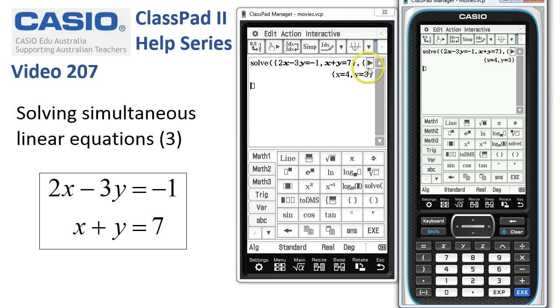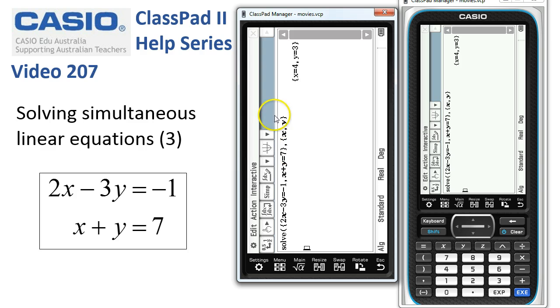Now, to see what we've typed in, we can choose the rotate option. Obviously, you can turn your viewing device around, but this does give you a wider screen width in main and a couple of other applications on ClassPad to see the result.